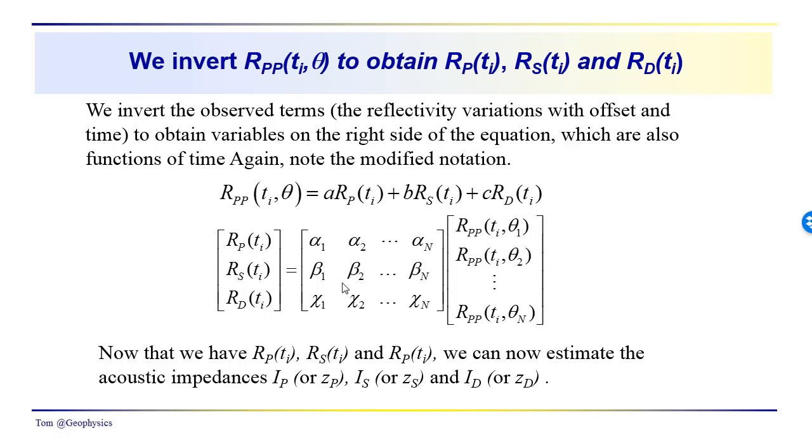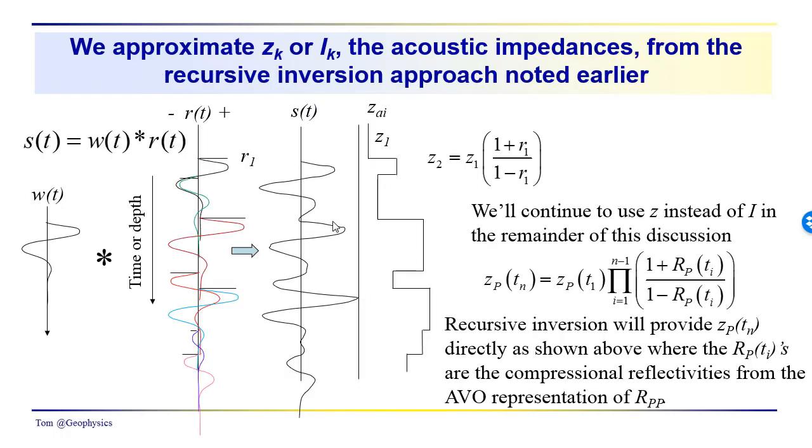So we're now able, once we go through this inversion process using that Marquardt-Levinson algorithm, we're now able to estimate the acoustic impedances: i sub p or z sub p, i sub s or z sub s, and the density impedance or z sub d.